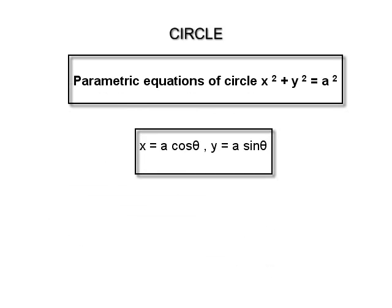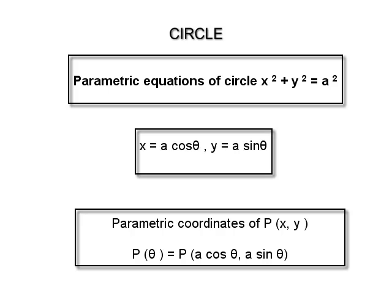x = a·cosθ and y = a·sinθ, where θ is a parameter, are the parametric equations of the circle x² + y² = a². The point P(a·cosθ, a·sinθ) represents the parametric coordinates of any point on the circle, denoted by P(θ).